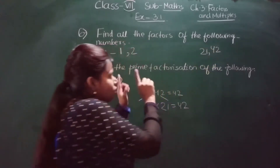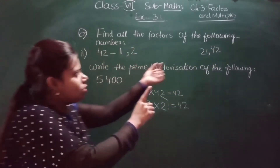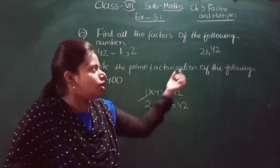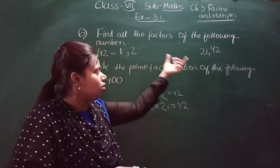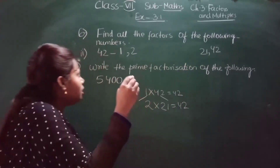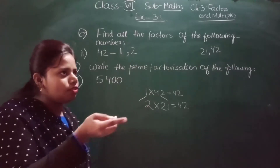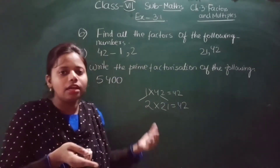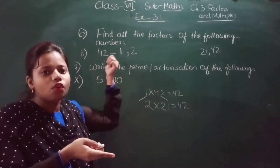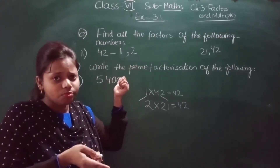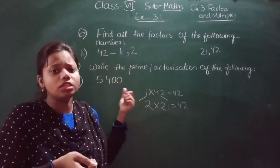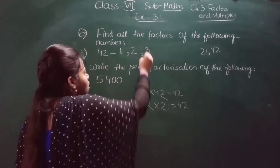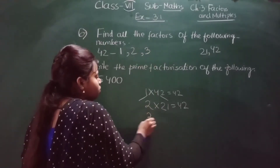We are filling in from both sides. That means between 21 and 42 there are no more factors to find in this range. Next, will 42 come in the 3 times table? To check, we add the digits: 4 plus 2 equals 6. Since 6 comes in the 3 times table, yes, 42 is divisible by 3.